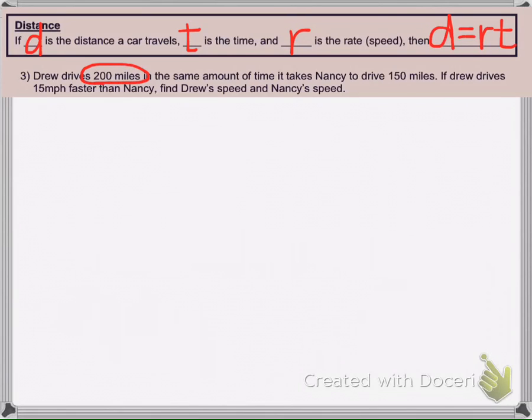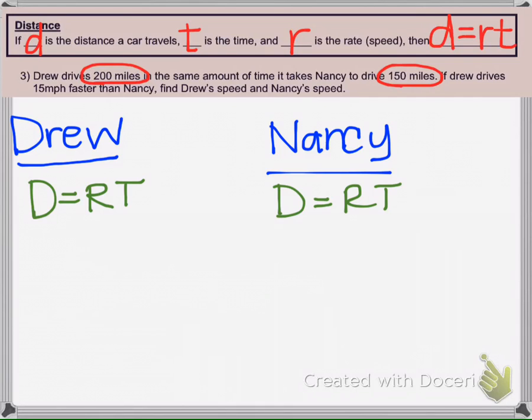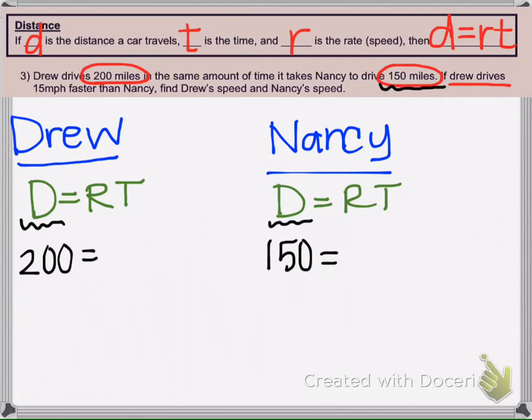So they gave us the distance both people go. So they told us that Drew's distance, D, is 200, and Nancy's distance is 150. Then it says, if Drew drives 15 miles per hour faster.